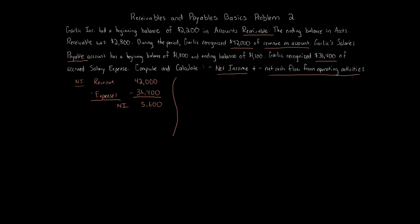Computing net cash flow from operating activities is challenging because we're not told anything directly about cash. We'll have to back out the amount of cash received or paid in these transactions. We're given beginning and ending balances of accounts receivable — current assets and current liabilities, whose changes go under operating activities on the statement of cash flows. Current assets have an inverse relationship: if current assets go up, cash decreases. Current liabilities have a direct relationship: if a current liability goes up, you're borrowing and receiving cash.